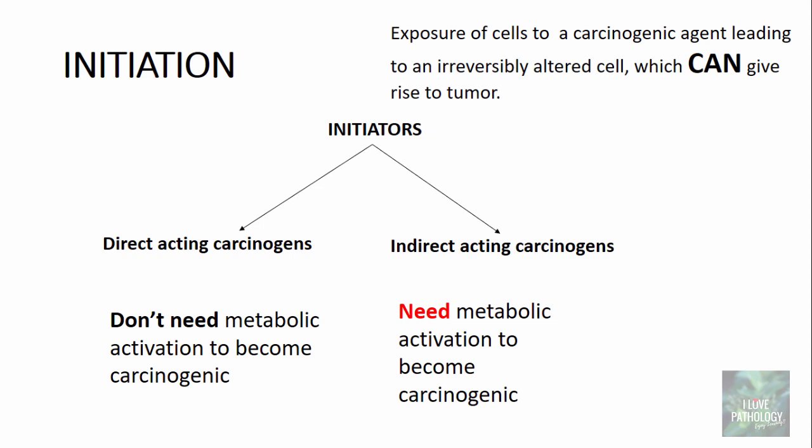What is metabolic activation? These indirect acting carcinogens are activated in the liver by the monooxygenases of cytochrome P450 in the endoplasmic reticulum of hepatocytes. The metabolically activated product of these indirect acting carcinogens is referred to as ultimate carcinogens. So indirect acting carcinogens are precursor carcinogens which, when metabolically activated, become ultimate carcinogens.